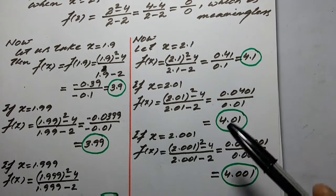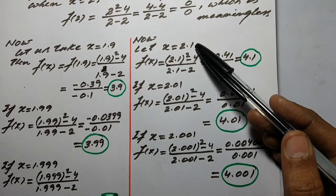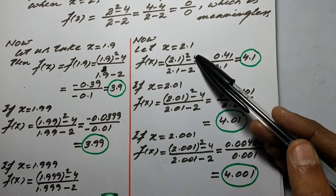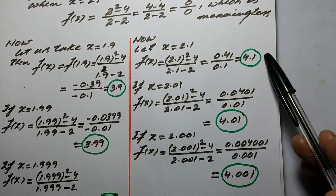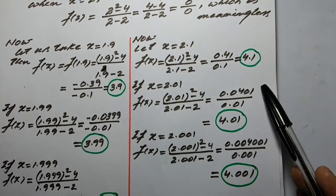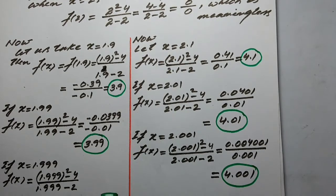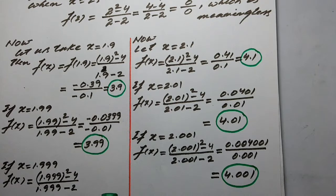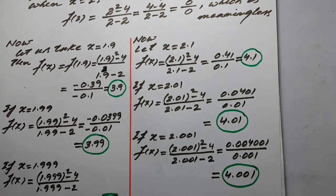We see that if we take the value of x from the right-hand side on the number line, closer and closer to 2, the value of f(x) goes closer and closer to 4. So we can say that if x approaches 2 from the right-hand side on the number line, the value of f(x) approaches 4.